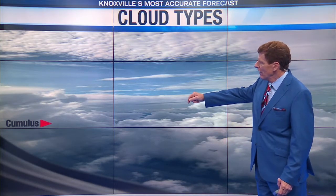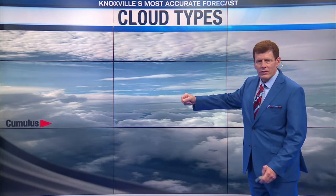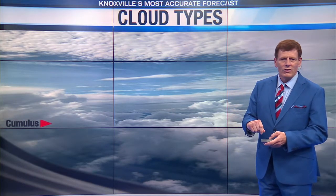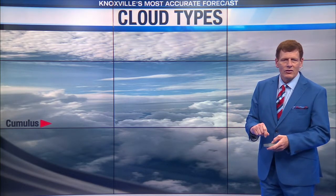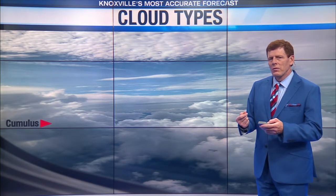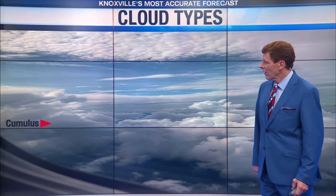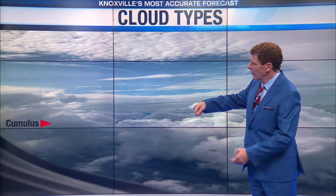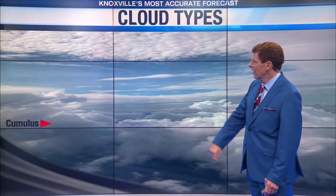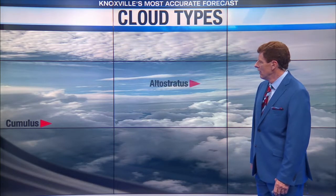Notice cumulus clouds — those are the puffy ones. Many people call them marshmallow clouds, popcorn clouds, cotton swab clouds, or whatever you want to call them, but they're cumulus. They're kind of puffy, mostly white but sometimes gray depending on the angle of the sun.